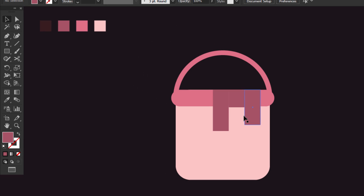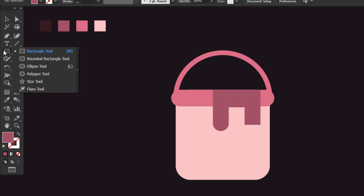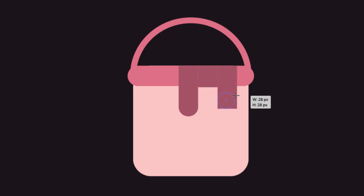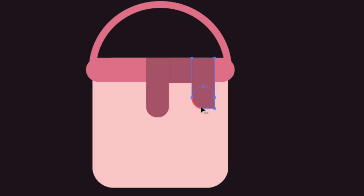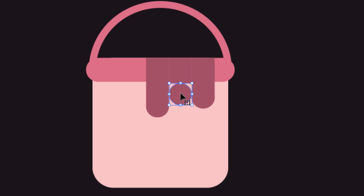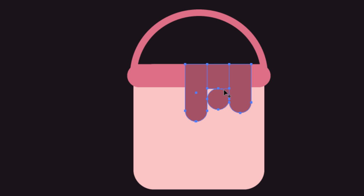If you have a CC version of Illustrator, you can simply hold Shift and select these two anchor points, then drag the live widgets to make this end rounded. If you don't have the CC version, don't worry. With the ellipse tool, hold Shift and make a circle with the same width as the rectangle, then hold Shift and select the rectangle, and with the shape builder, hold Alt and click on the corners to remove them. With the shape builder, click on the negative space between to fill it.